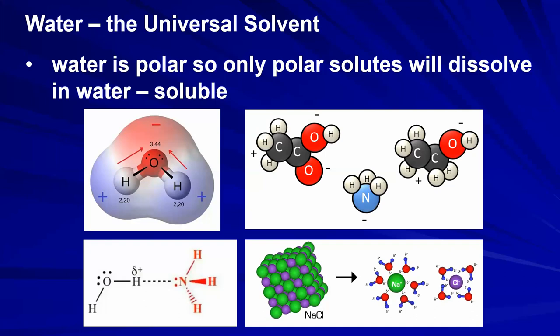Most of the messes in life are polar, which is why water cleans them up. The positive end of water (hydrogen) is attracted to the negative end of ammonia (nitrogen), forming a slight magnetic attraction that helps clean it up.